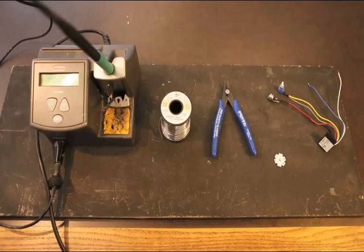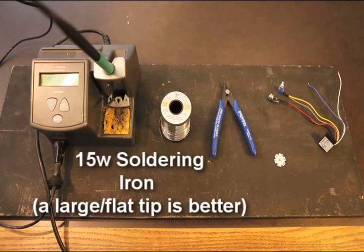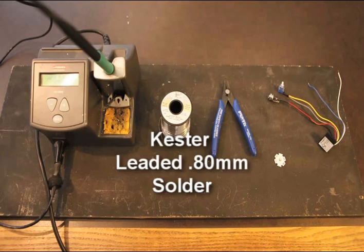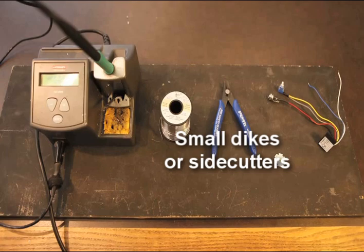The tools used in this video consist of a sturdy and heat-safe surface suitable for soldering on, such as a piece of wood, a basic 15-watt or equivalent soldering iron (a large, flatter tip works better), a spool of thin solder (we recommend Kester .80mm solder with lead), and a small pair of dykes or side cutters.